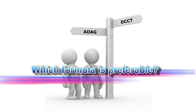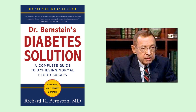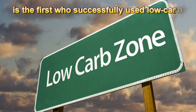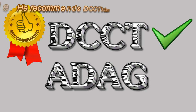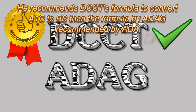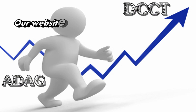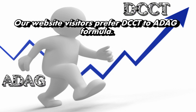Which formula is preferable? Dr. Richard K. Bernstein, author of the popular book Diabetes Solution, was the first to successfully use a low-carb diet for his type 1 diabetes control, with an A1C of 4.2 to 4.6. He recommends DCCT's formula to convert A1C to blood sugar rather than the ADAG formula recommended by the ADA. Our website visitors also prefer the DCCT to the ADAG formula.